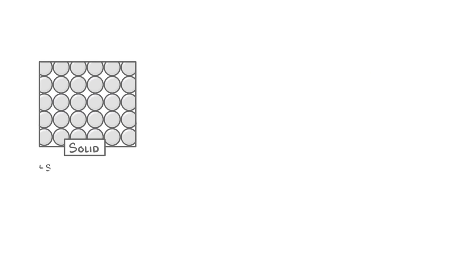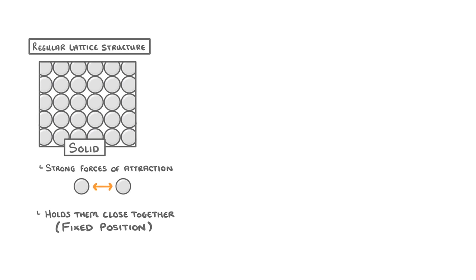In solids there are strong forces of attraction between the particles which holds them all close together in a fixed position to form a regular lattice structure. Because the particles are fixed, the overall substance keeps a definite shape and volume, so can't flow like a liquid.